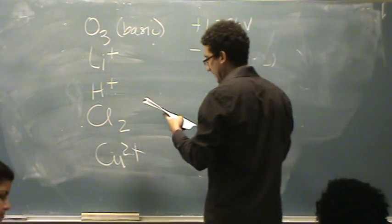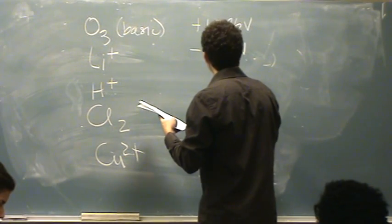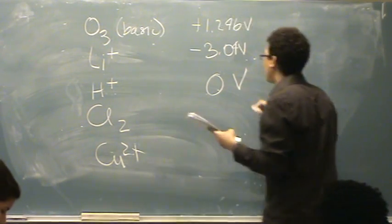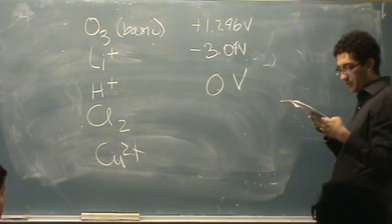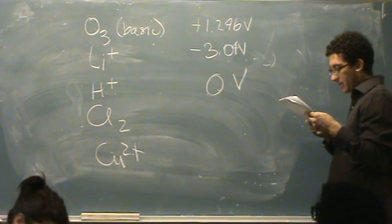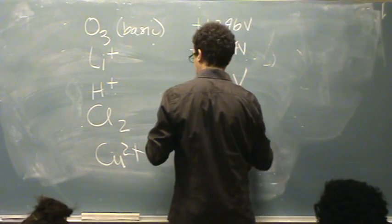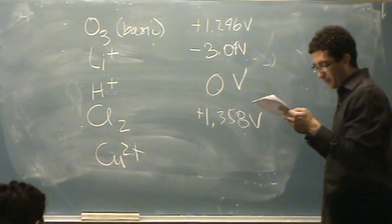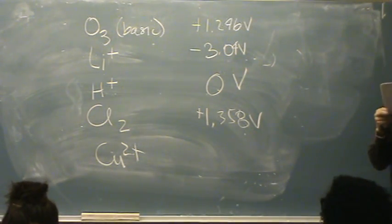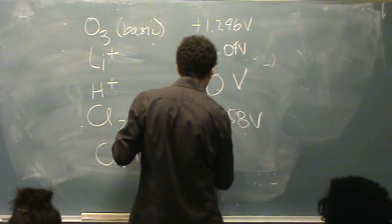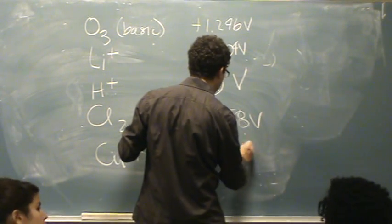H plus, that's my standard hydrogen electrode, so that better be zero. Cl2 is plus 1.358. And Cu2 plus is plus 0.340 volts.